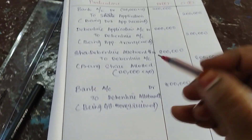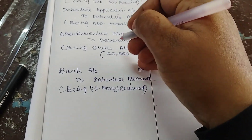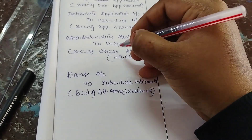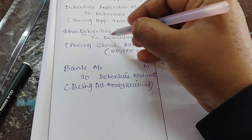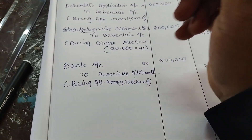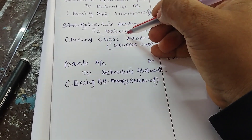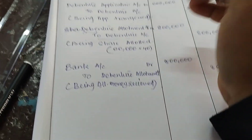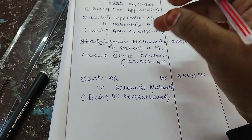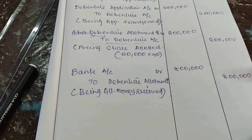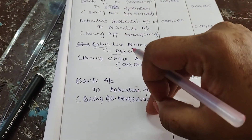Here you need to be careful: when the debenture is allotted at a discount, the discount will come on the debit side as 'Discount on Debentures.' If the debenture is allotted at a premium, there will be a separate credit entry for the premium. I will discuss that in the next video. Right now we will go as per the question.